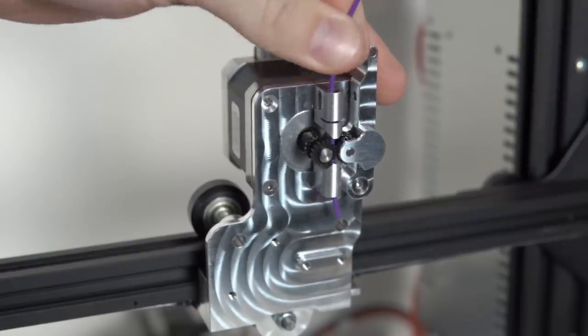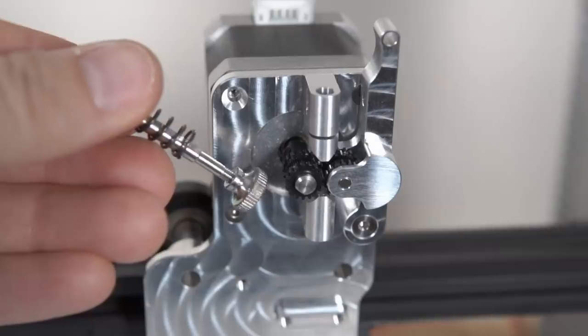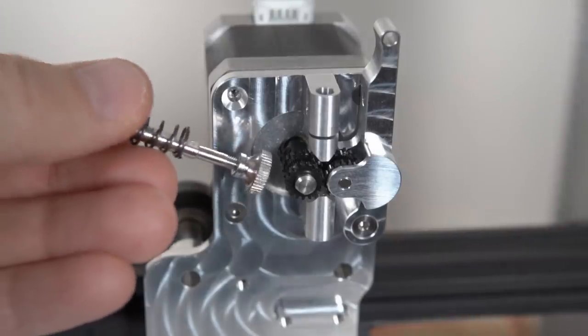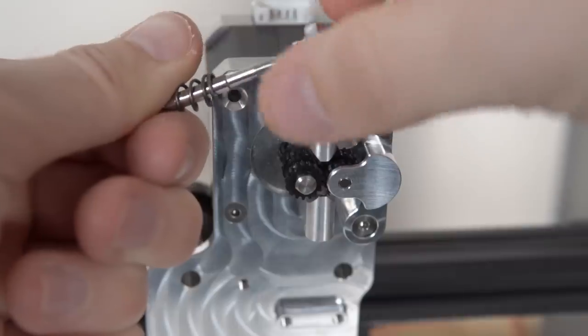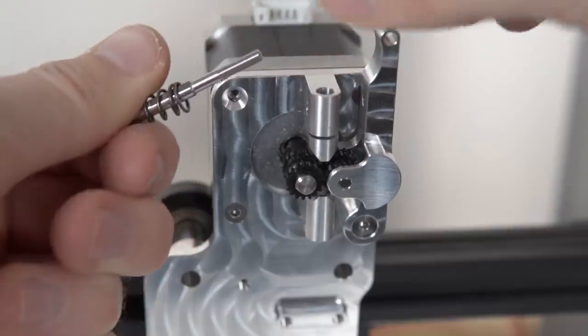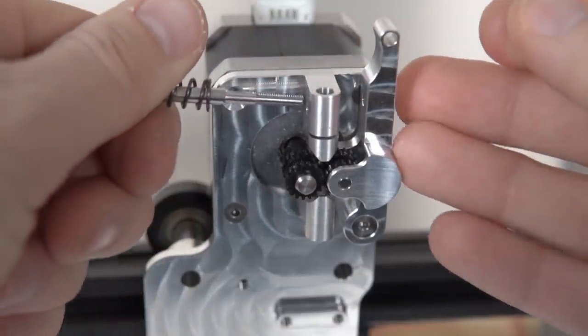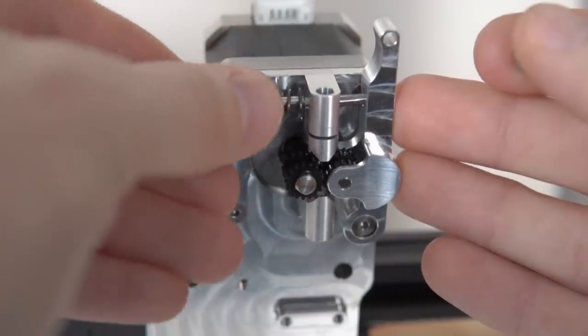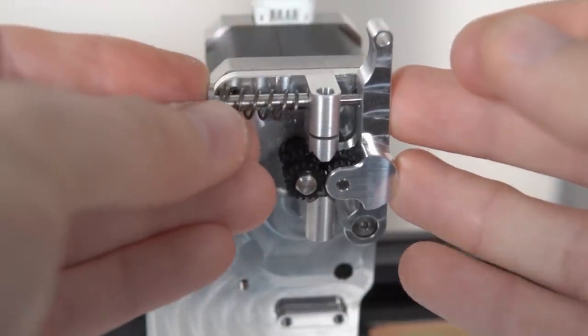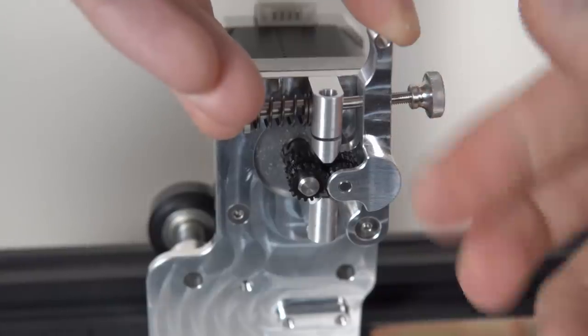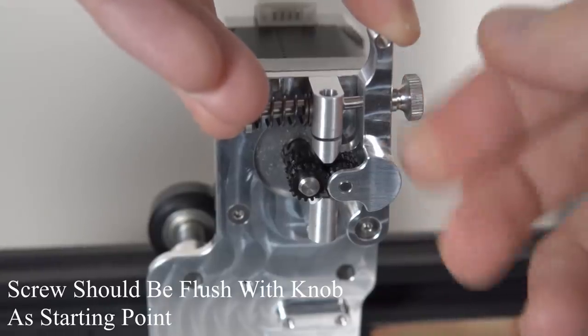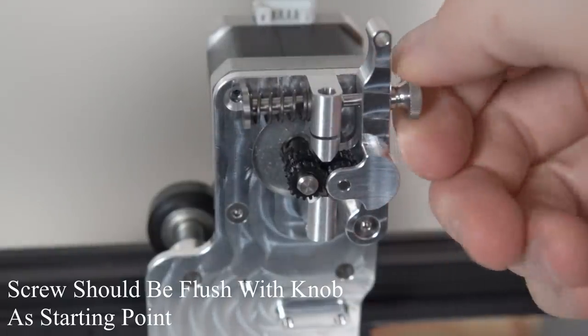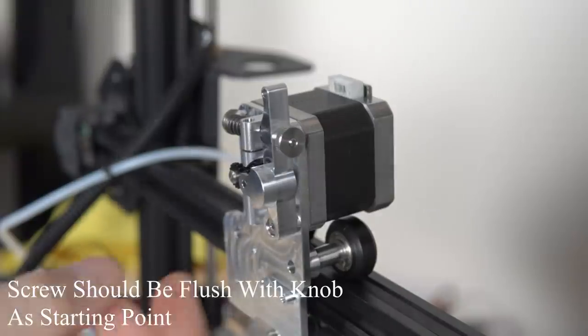Now we're going to get the lever adjusting knob and remove the threaded side. Shove that through the center and through the tensioner arm of the extruder and then tighten it. Micro Swiss recommends that you should have the screw pretty much flush with the outside as a starting point. You can obviously play around with that down the line.